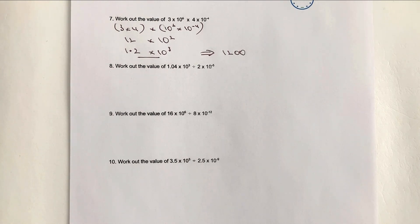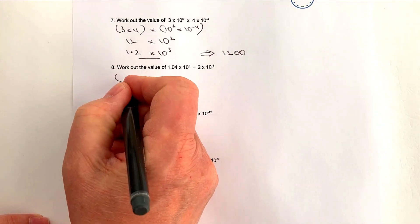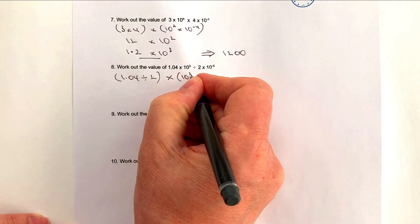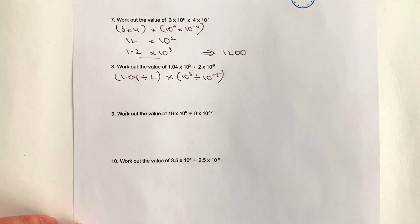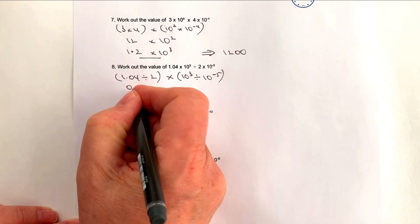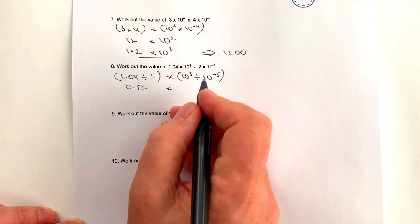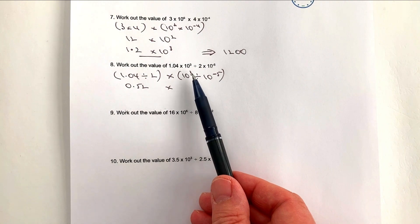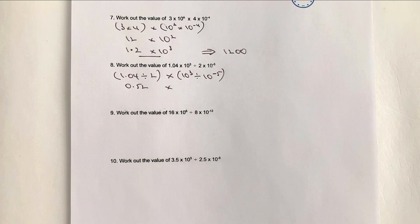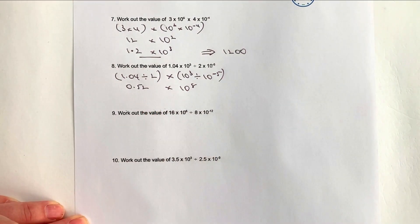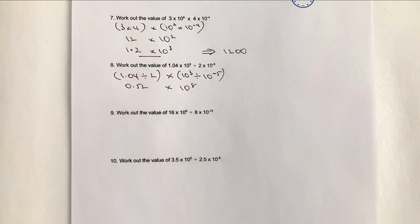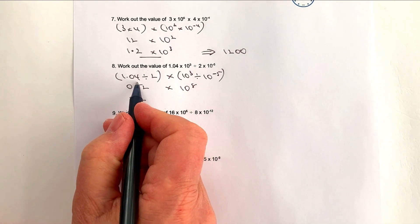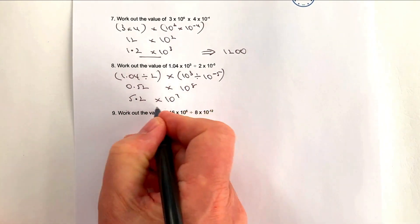Question 8: we're dividing, so we separate the calculation from the standard form. It's 1.04 divided by 2, and 10 to the 3 divided by 10 to the minus 5. 1.04 divided by 2 is 0.52. For the indices, it's a division so we subtract: 3 minus minus 5 — two minuses make a plus — giving 10 to the power of 8. So we have 0.52 times 10 to the 8, which in standard form is 5.2 times 10 to the power of 7.